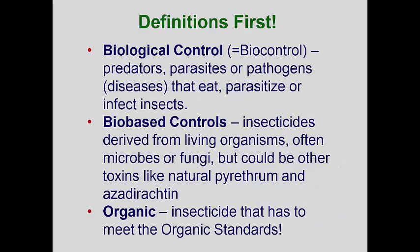Before we proceed, we need to make sure that we all understand what a biological control is. There is quite a bit of confusion about this in the industry. First, a true biological control is a living organism that makes its living by attacking or infecting a pest. In the insect world, the attackers are usually predators like ground beetles, ants, spiders, predatory mites, and the like.